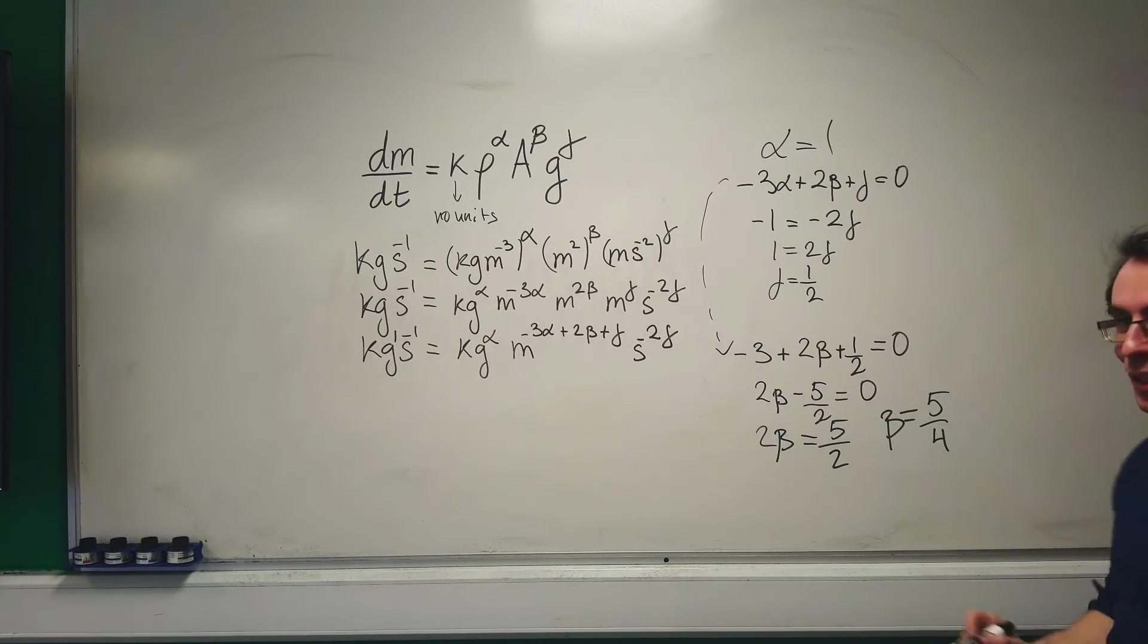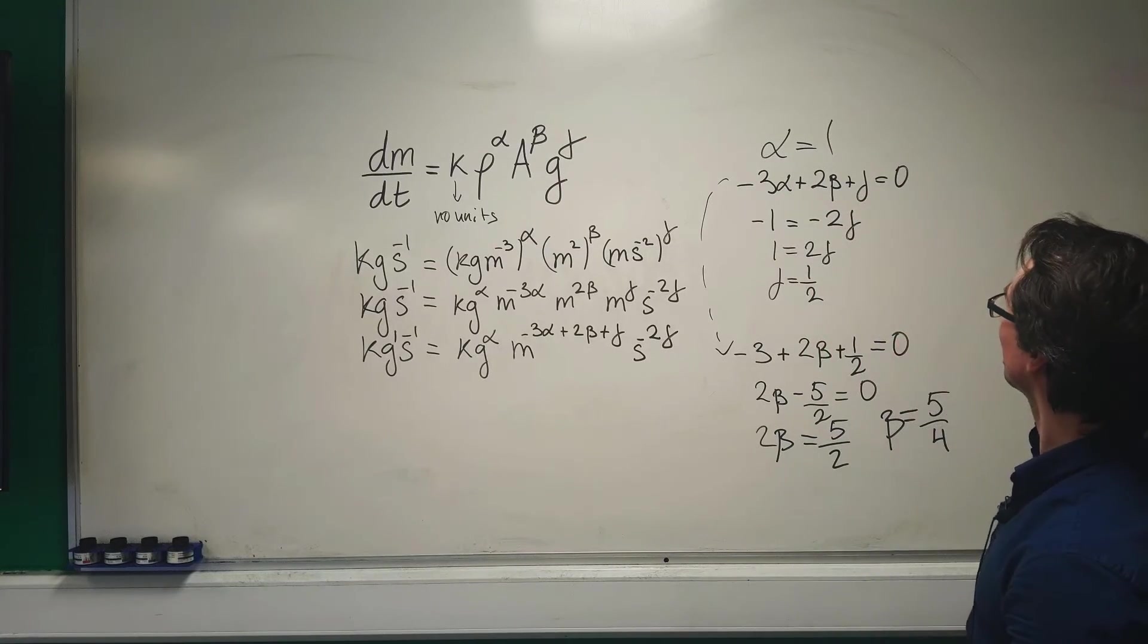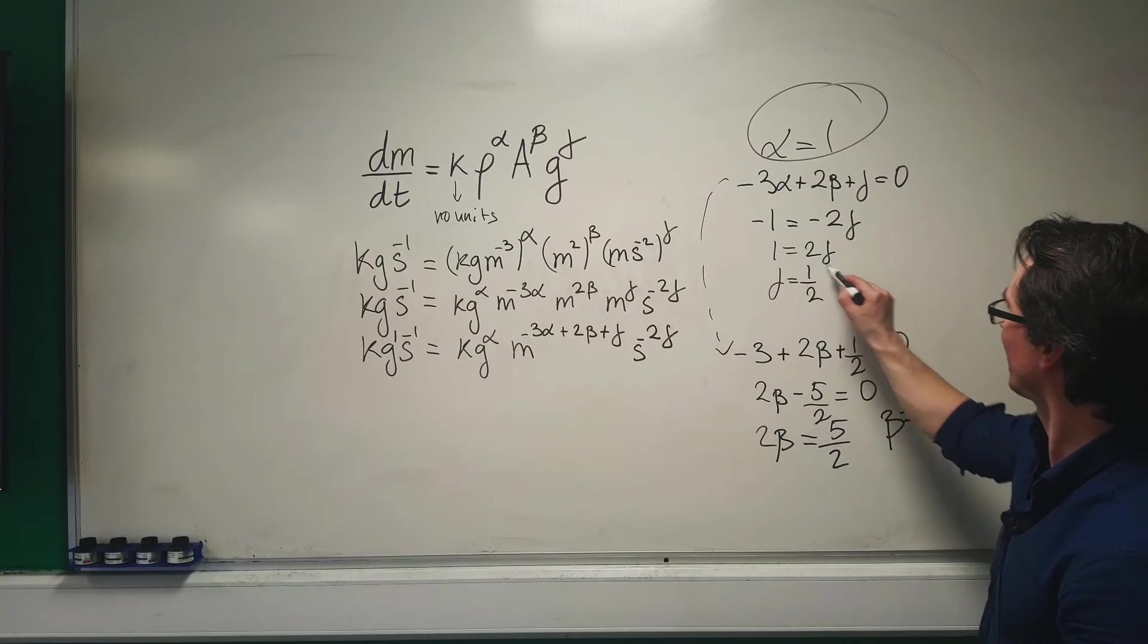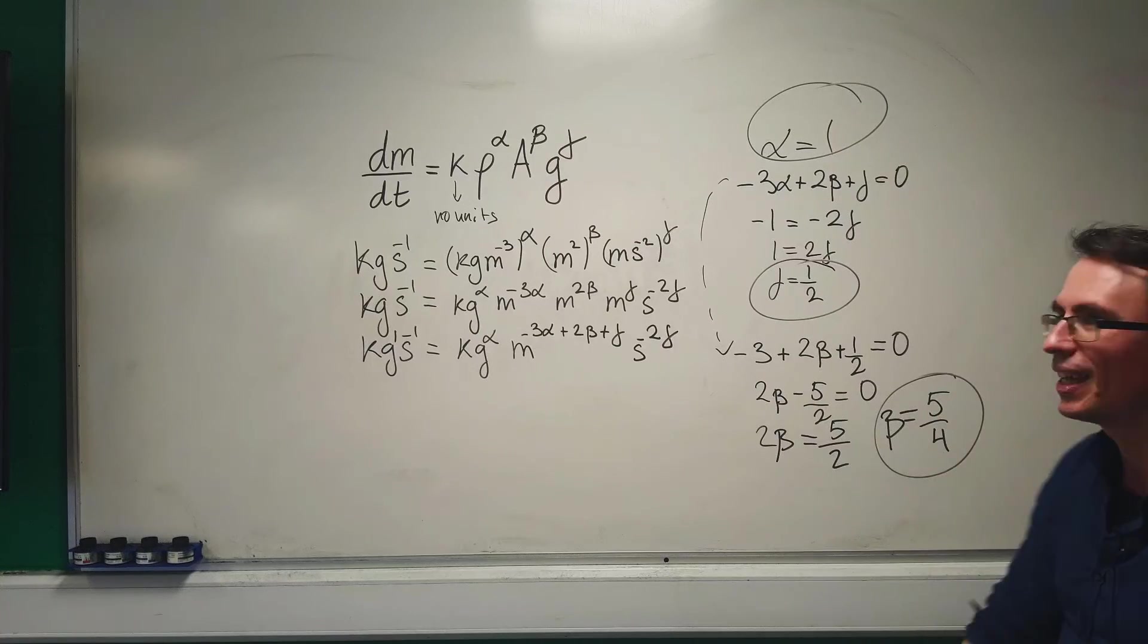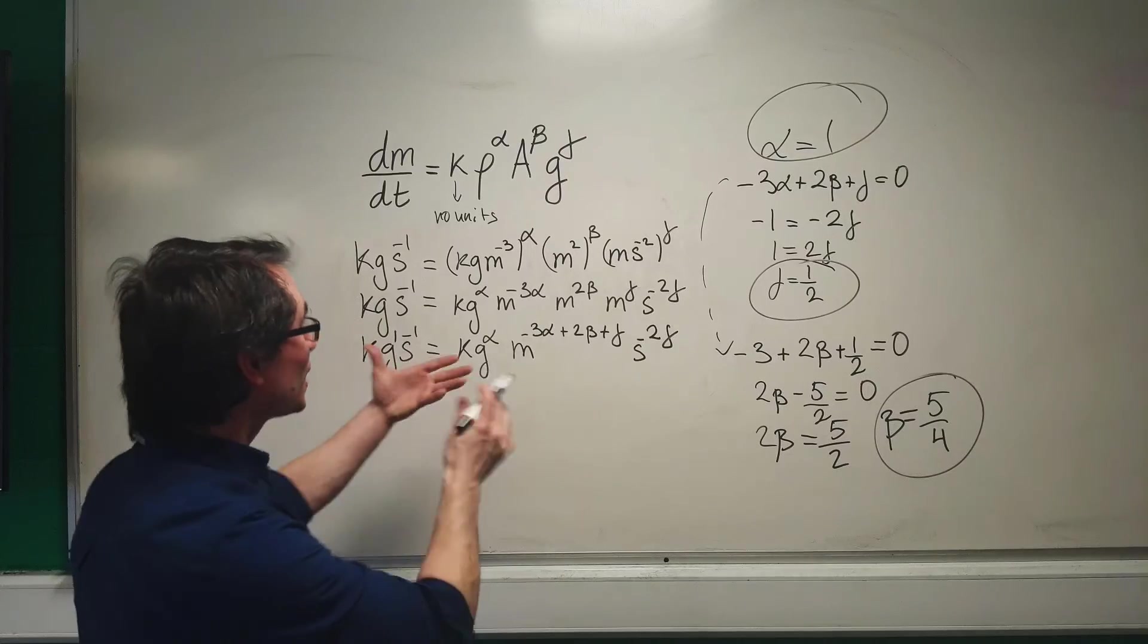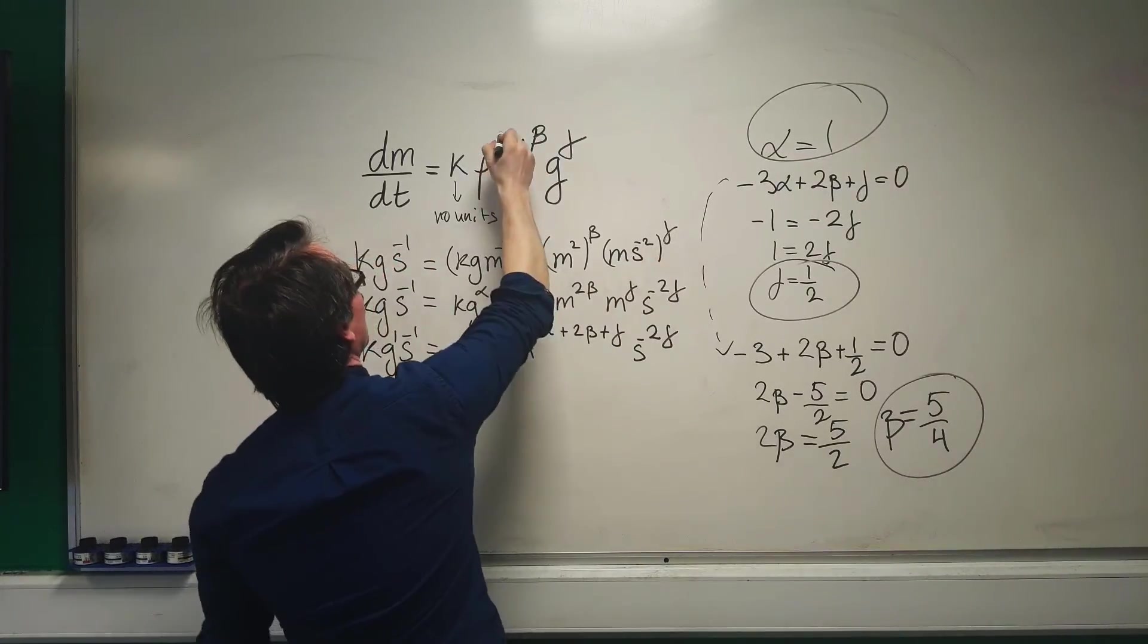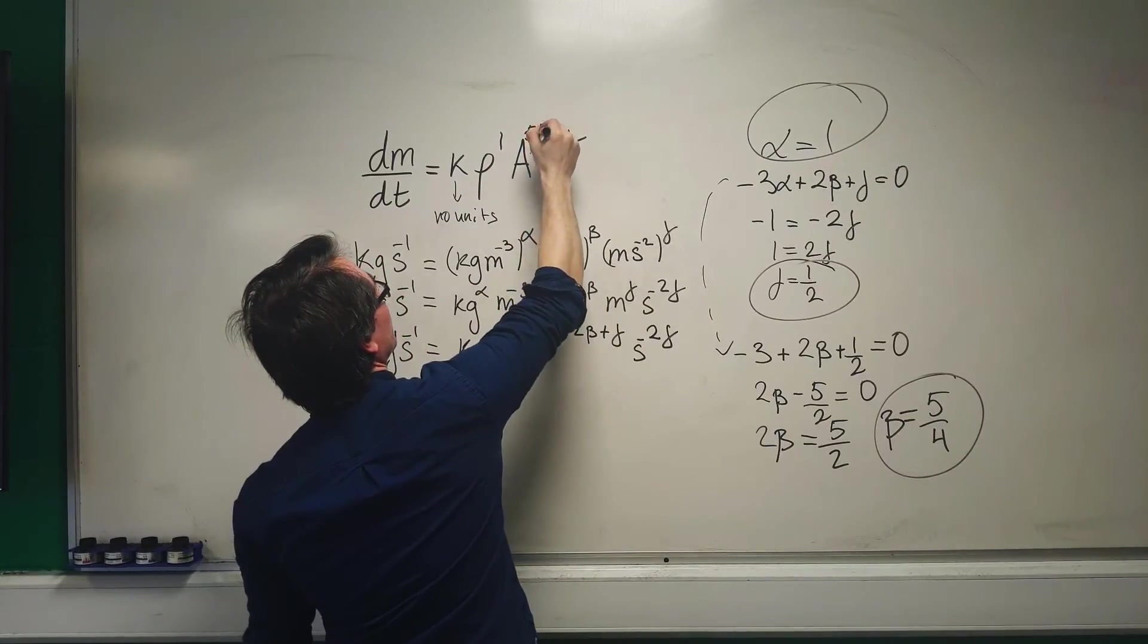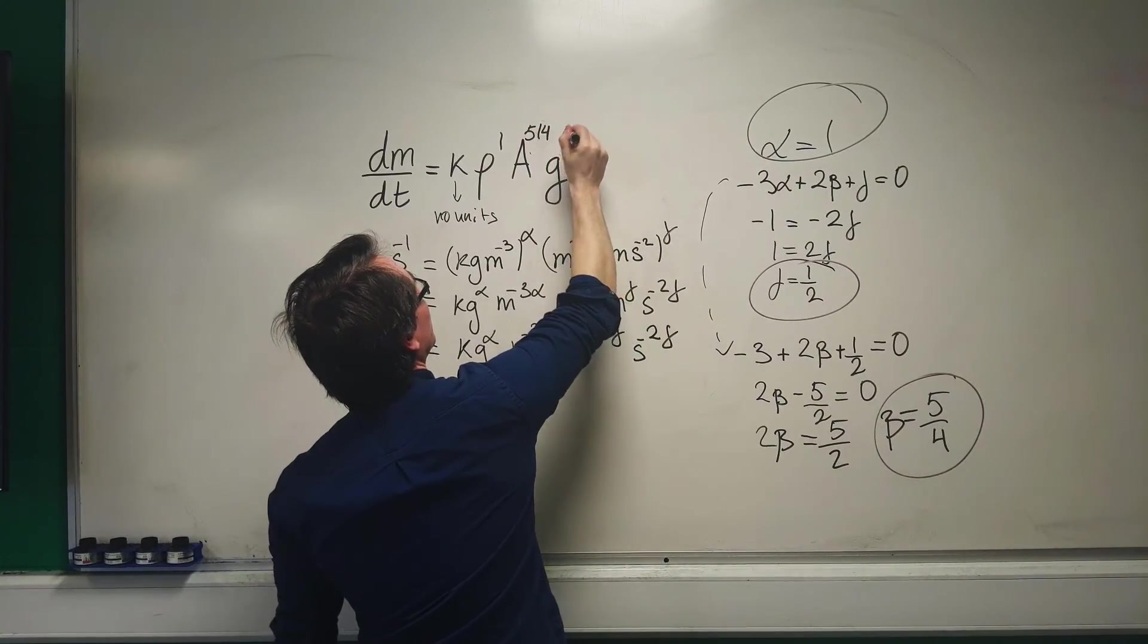We've figured out all our coefficients! Alpha equals one, gamma equals one-half, and beta equals five-quarters. We can now rewrite the equation with these values.